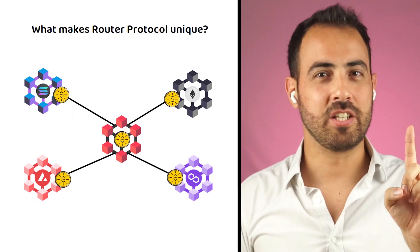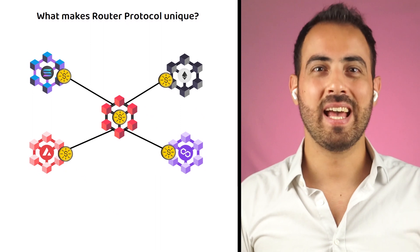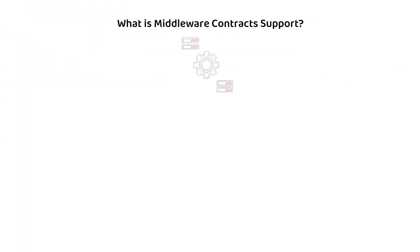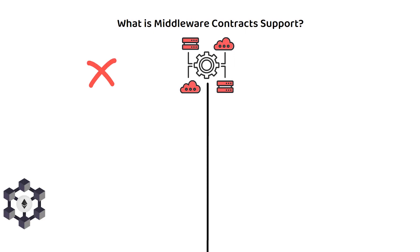Though, one additional feature of Router Protocol is the middleware contract support. To keep it simple, middleware contract support was what was missing and prevented smart contracts from efficiently working cross-chain.